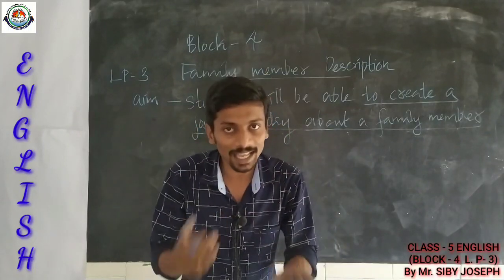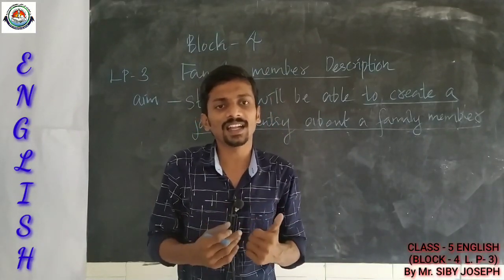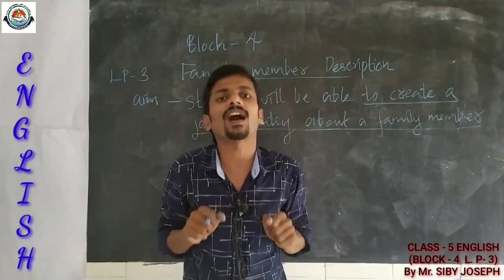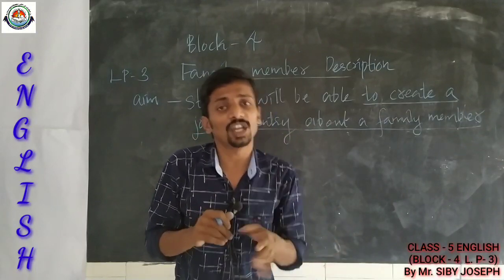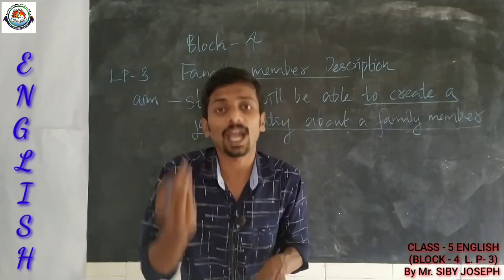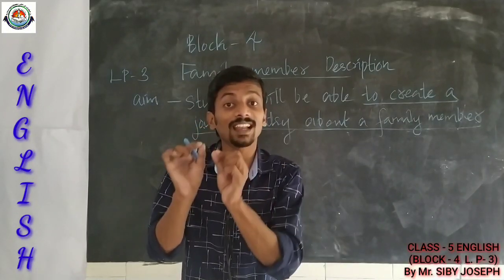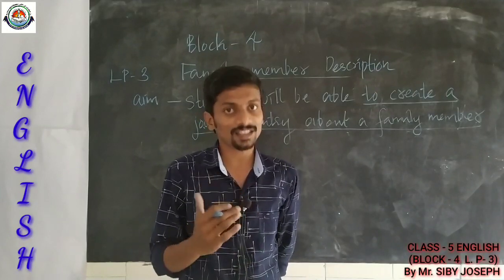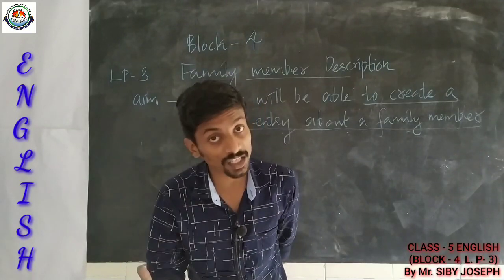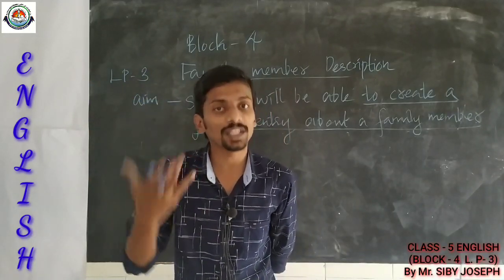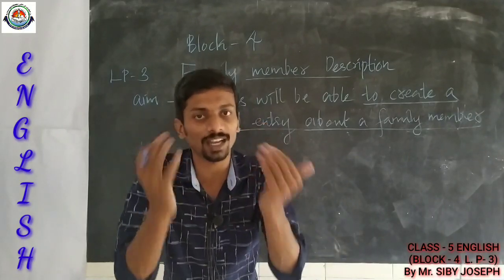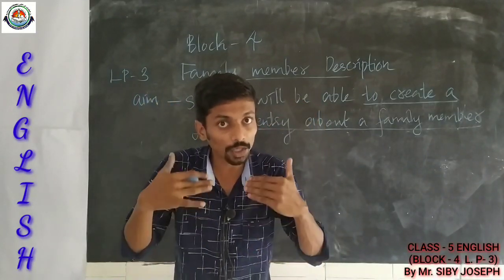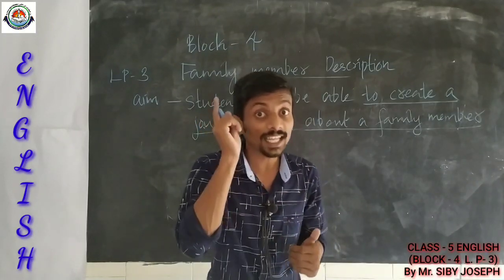As we discussed, we have come across Sunita's journal entry and simply speaking it was all about her father. In Sunita's journal entry she discussed in every minute detail about her father. So the journal entry is filled with many informations. That means Sunita's journal entry is filled with many informations regarding her father. In order to create a journal entry, we need informations.